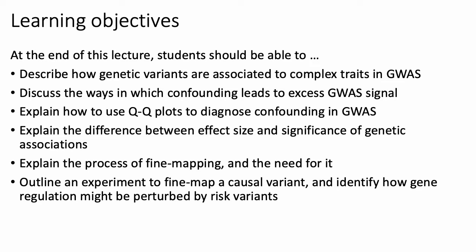One of the biggest challenges historically with genome-wide association studies is dealing with confounding factors. We'll discuss briefly what those are and some basic strategies for correcting for them. We'll also discuss how to identify population structure and families from genetic data, since population structure is one of the biggest confounding factors.